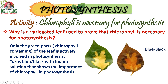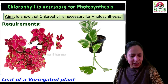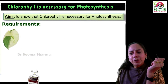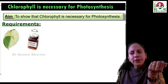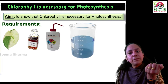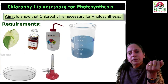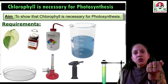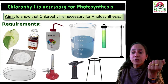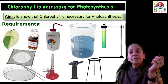Now let's look at the requirements for this activity. You will need a variegated leaf — it can be from a money plant — iodine solution, ethanol, a beaker with water, a petri dish, a Bunsen burner, a lighter, a test tube with holder, a tripod stand, wire gauze, and forceps.